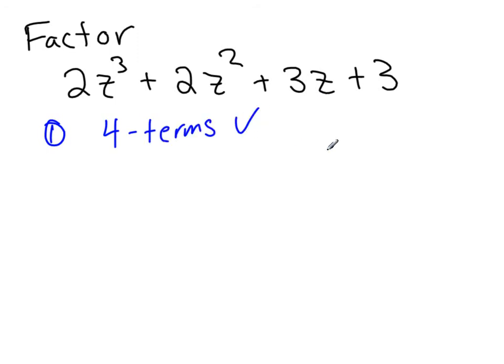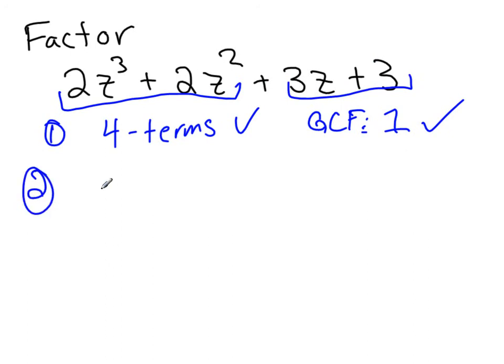Next thing, we need a GCF of 1. Let's see, we got z³, z², z, no z's. Okay, no variables. We're in the clear there. 2, 2, 3, 3. Well, 3 can't go into 2 and 2 can't go into 3. So all that they have in common is 1. Excellent. So the first criteria is met. Next step, we're going to group them. Group the first two together and the last two together. I recommend always doing the first two, last two. It actually doesn't really make a difference if you want to group them slightly differently. You can jumble it up a lot and still factor by grouping fairly nicely. So we've got the first two to group together and the last two. Now our third step is to find the GCF between the two separate groups.